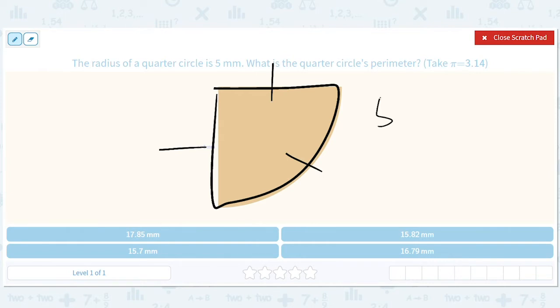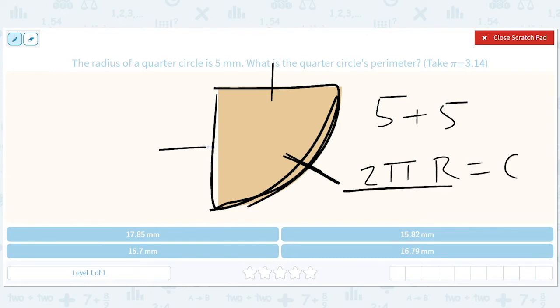So we're going to end up with 5 plus 5 plus the quarter circle, and the quarter circle is going to be 2 pi r which is the circumference divided by 4. So we have to do this and then we have to add 10. So what's 2 pi r?